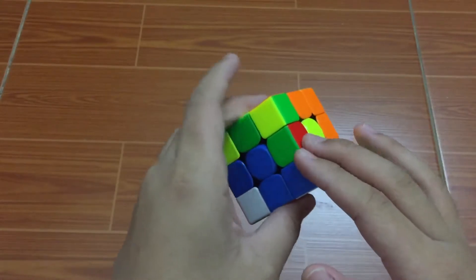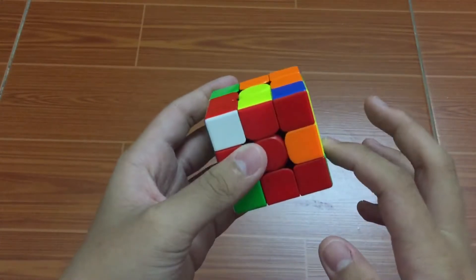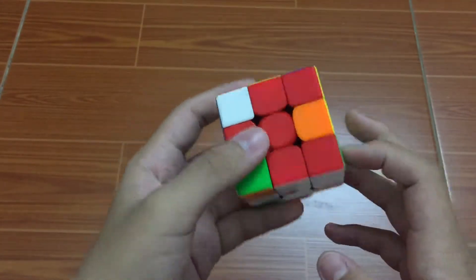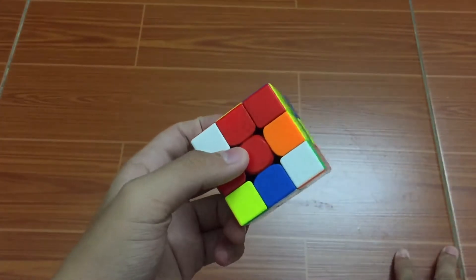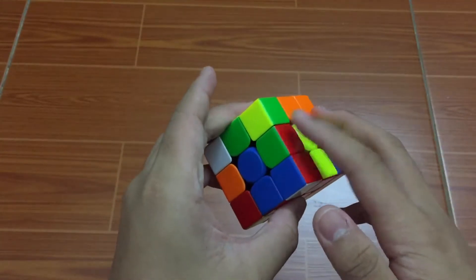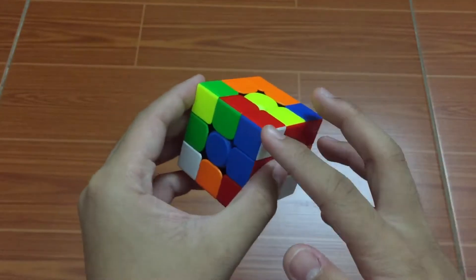And you see both the edge that needs to go here and the corner that needs to go here. Then you would want to pair up these two, so you insert this edge to here and this corner to here.